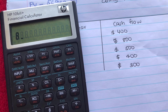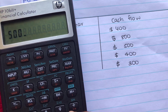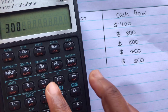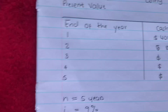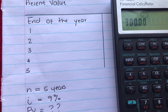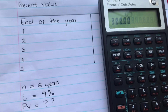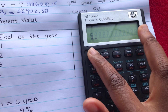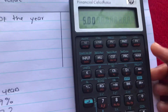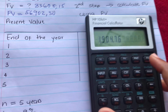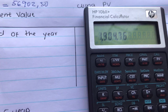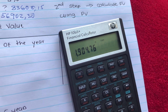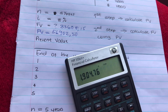For year one it's 400, for year two it's 800, for year three it's 500, for year four it's 400, and for year five it's 300. The interest rate is nine percent and N is five years — even if you weren't given the N you'd know it's five years. We enter nine percent as the interest, then five as N. We press orange shift then NPV — our NPV is one thousand nine hundred and four point seven six.